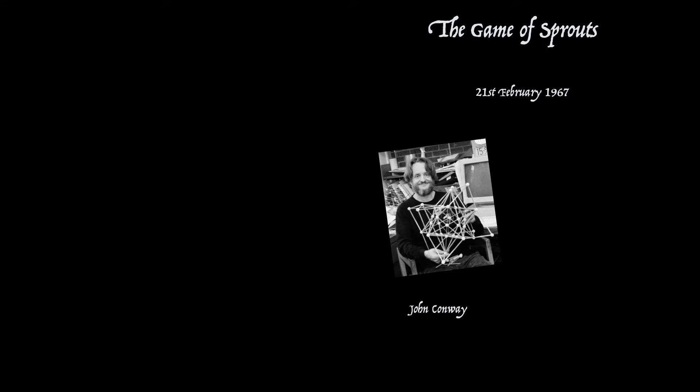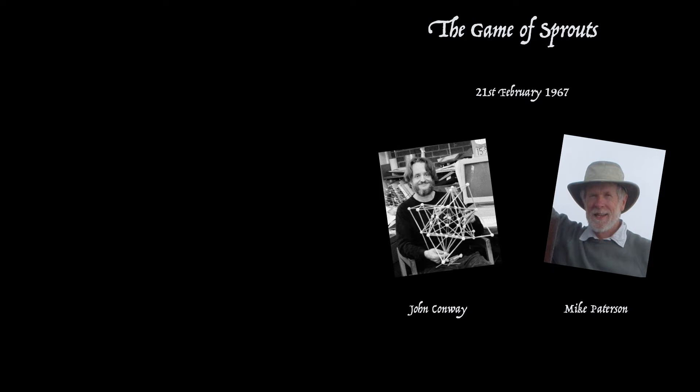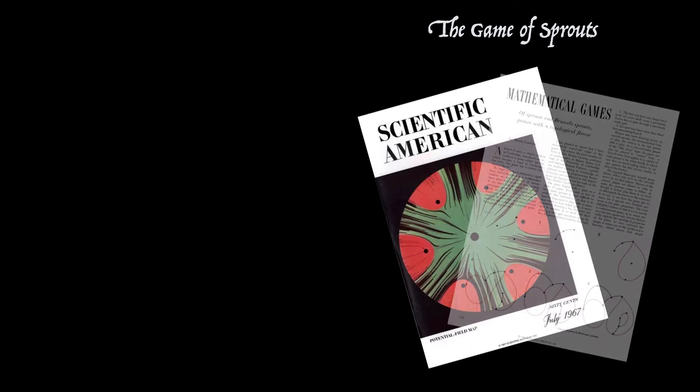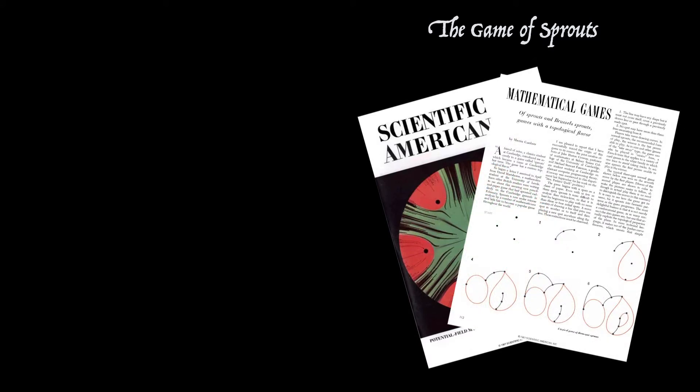Mr. Corsi here. The Game of Sprouts came into existence in the afternoon of Tuesday, February 21st, 1967, in Cambridge University in the Maths Department Common Room. John Conway, who was a maths professor at the time, and Mike Patterson, who was a graduate student, were both doodling on paper trying to invent a new paper and pencil game. Once they'd invented it, it spread like wildfire throughout Cambridge University and eventually worldwide when it was featured in Martin Gardner's Mathematical Games column in the July 1967 edition of Scientific American.